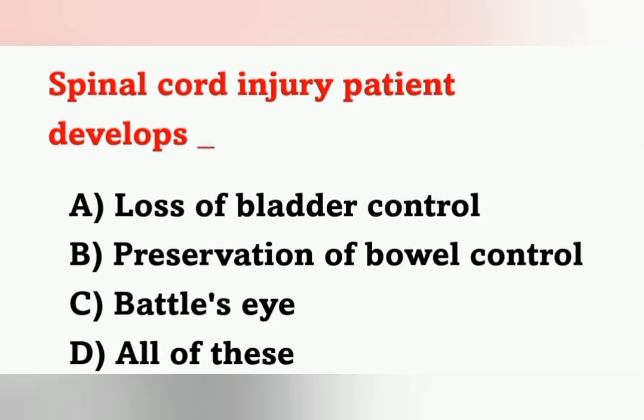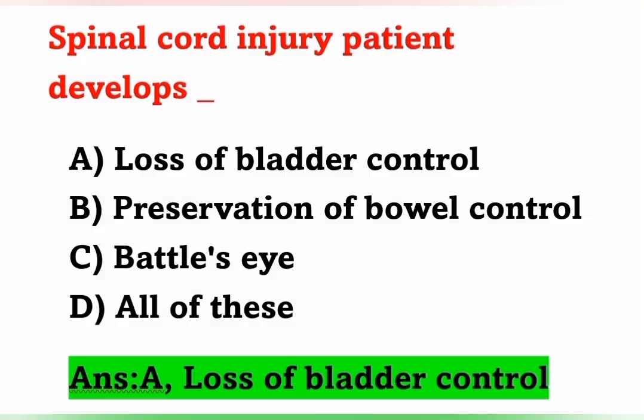Next question: Spinal cord injury patient develops which of the following? Options: A) Loss of bladder control, B) Preservation of bowel control, C) Battle's eye, D) All of these. Spinal cord injury patients can develop loss of bladder control, i.e., urinary incontinence. Option A is the correct answer.